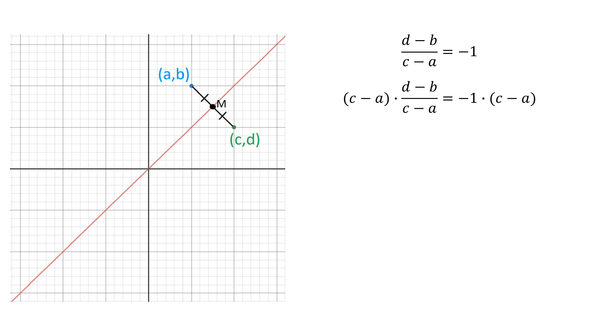First, we'll multiply both sides by c minus a. So on the left-hand side, the c minus a's cancel. And then we're just left with negative 1 times c minus a on the right. So we'll distribute that negative 1. And we have d minus b equals negative c plus a. This is the second equation we needed to get to.